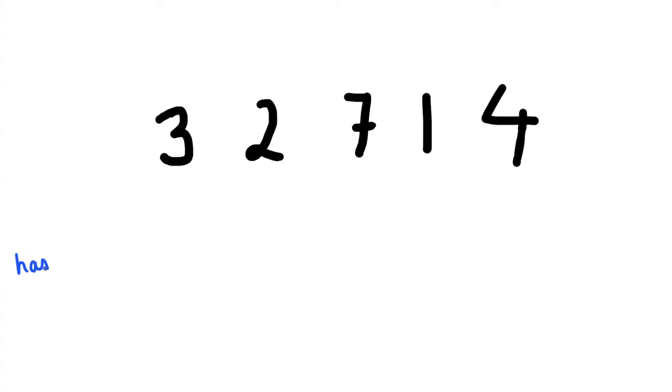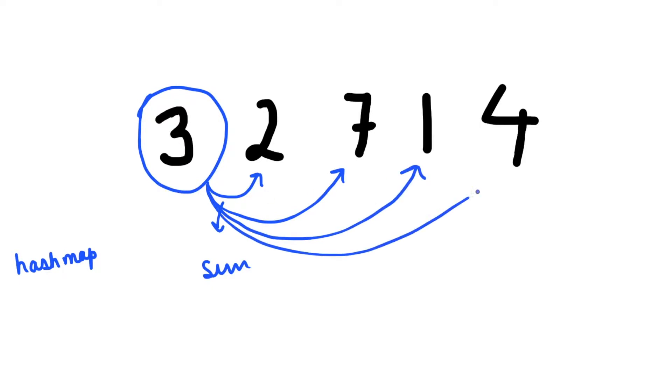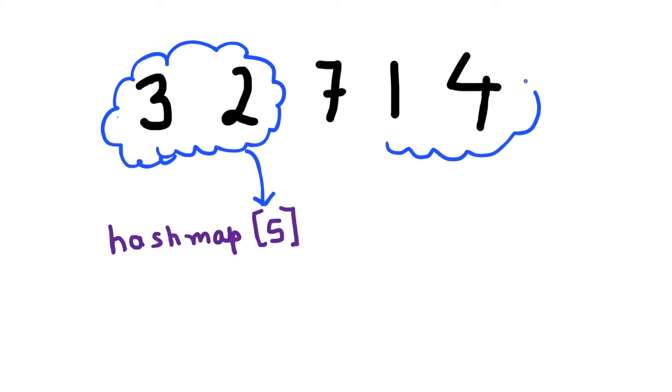We can start with doing summation of all possible pairs we have in this array and put it into a hash map. So if we are able to find the same sum again, we can say that there exist four elements in this array such that a plus b is equal to c plus d.